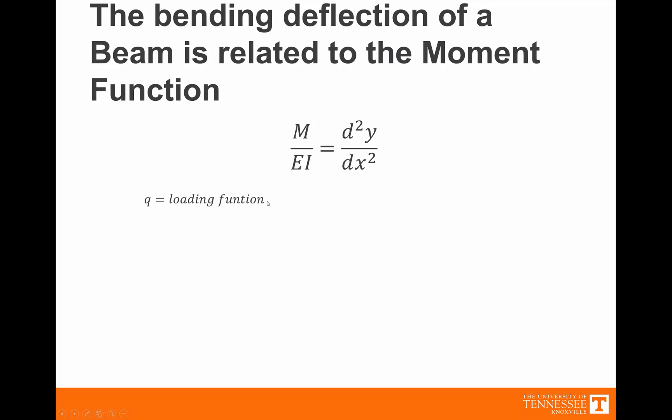Let's let Q be a loading function. We've learned previously that if we integrate Q, we get the shear function. If we integrate the shear function, we get the moment diagram. If we integrate the moment diagram and divide by this physical constant, we get the slope of the beam along that location. And if we integrate one more time, we'll get the deflection of the beam along that location.